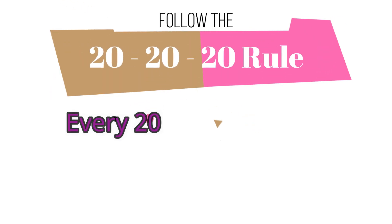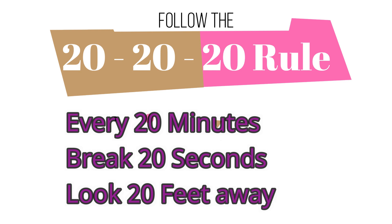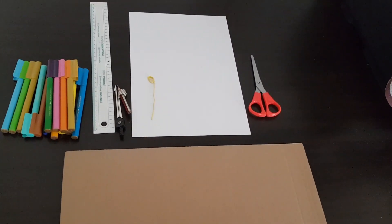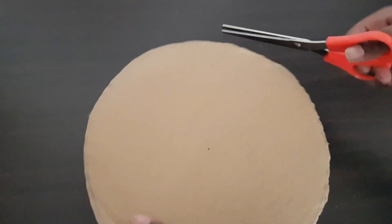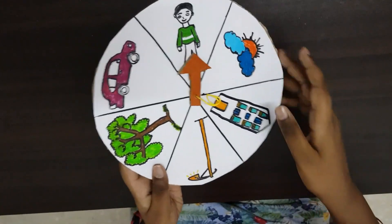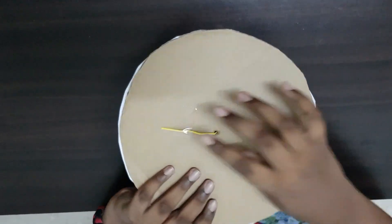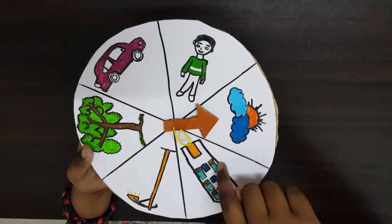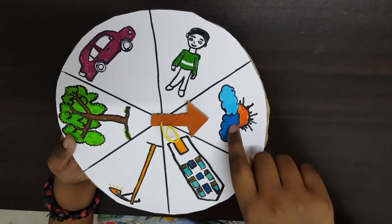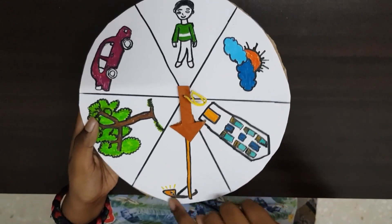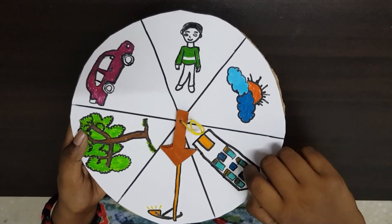Next, follow the 20-20-20 rule. The rule says every 20 minutes spent looking at the screen, you should look at something 20 feet away for 20 seconds. I have made a fun game to follow this rule. To make the game, take a piece of cardboard, white paper, scissors, and color pens. Cut the cardboard into a circle, stick white paper on the cardboard, then attach a metal wire to a cardboard arrow and cardboard circle and stick it to the bottom. Draw different objects you can look out from a window, such as a car, tree, and sky. To play the game, spin the arrow and find the object from a window that is 20 feet away, then look at it for 20 seconds where the arrow stopped.